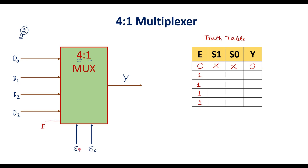With two select lines S1 and S0, there are four possible combinations: S1=0, S0=0; S1=0, S0=1; S1=1, S0=0; and both S1=1, S0=1. Now I will explain how the MUX works for each of these combinations.